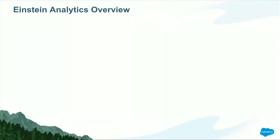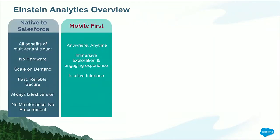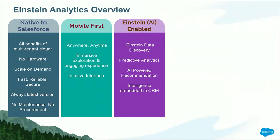How many of you are familiar with Einstein Analytics? It was formerly known as Wave, and rebranded as Einstein Analytics from the Summer '17 release this year. Some key features to highlight: it's native to Salesforce, with three releases, always with the latest versions available. It's mobile ready, which means you have access to your data anytime, anywhere, with rich visualization. It's also Einstein AI powered. With Einstein Data Discovery, added as an add-on product, you can perform what-if analysis based on machine learning, and it includes predictive analytics. It's also intelligence embedded in your CRM system.